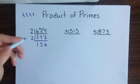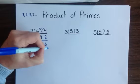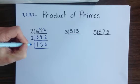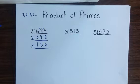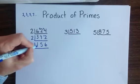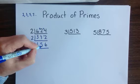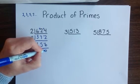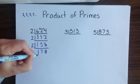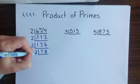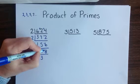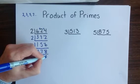With 156 still being an even number, I know that 2 will once again fit evenly into my dividend. So I put a 2 on the outside again. 2 does not fit into 1, but it fits into 15 seven times with 1 remaining, and into 16 eight times. 78 as an even number will again be divided by 2. 2 fits into 7 three times with 1 left over, and into 18 nine times.